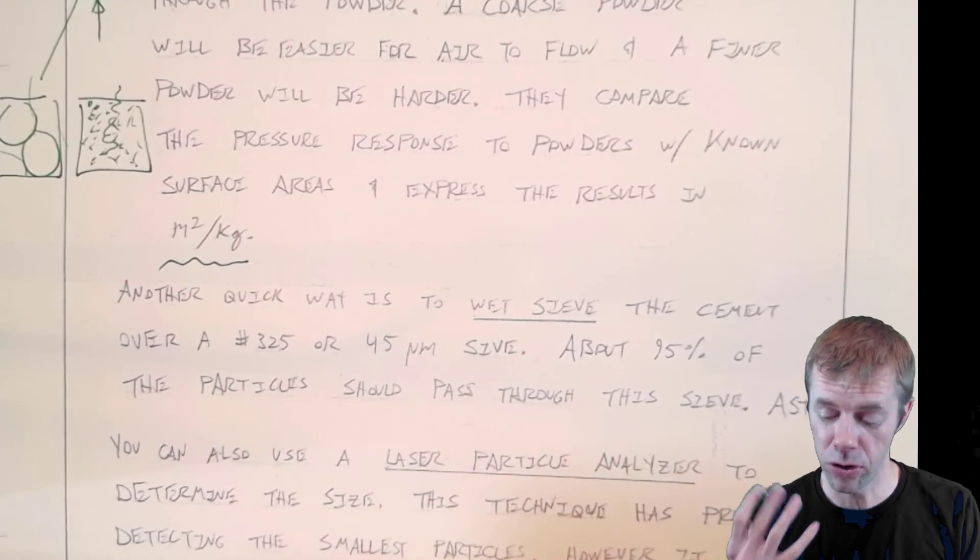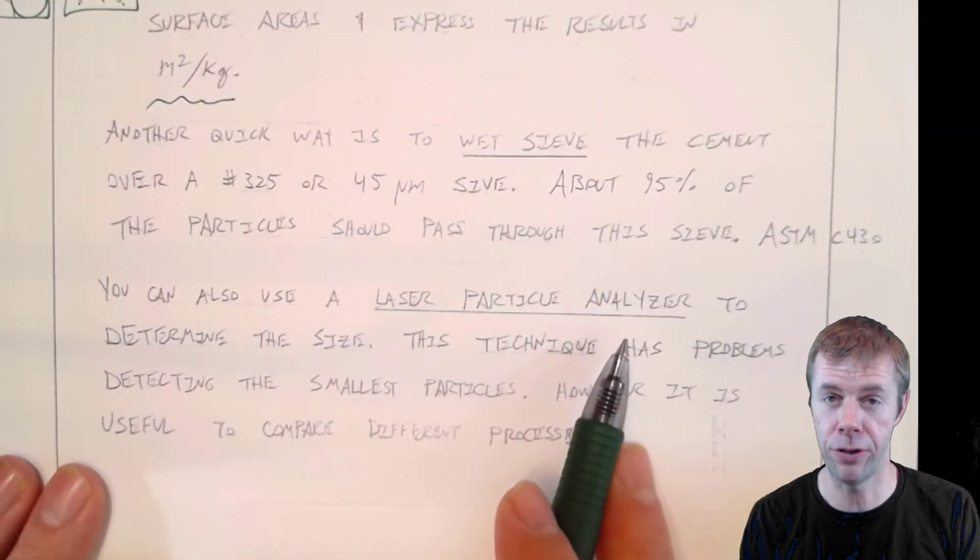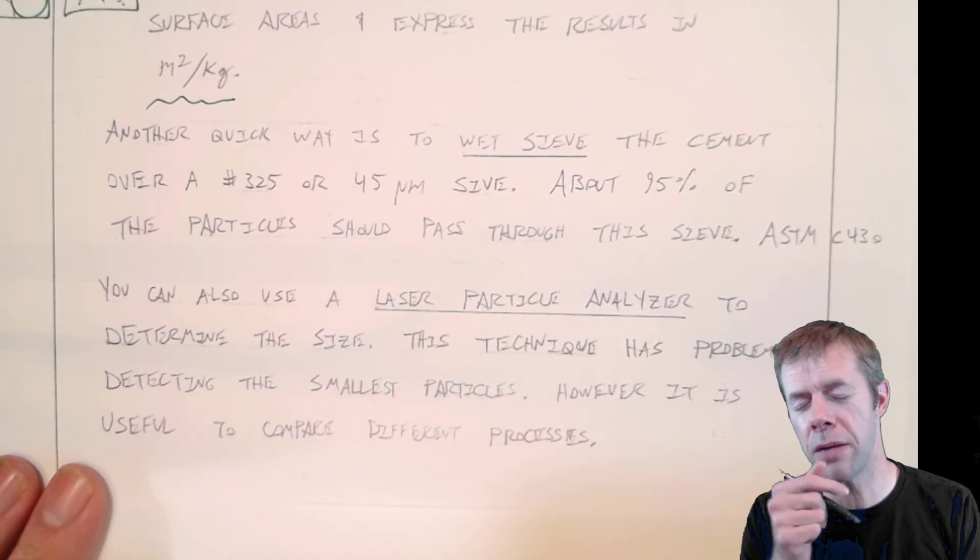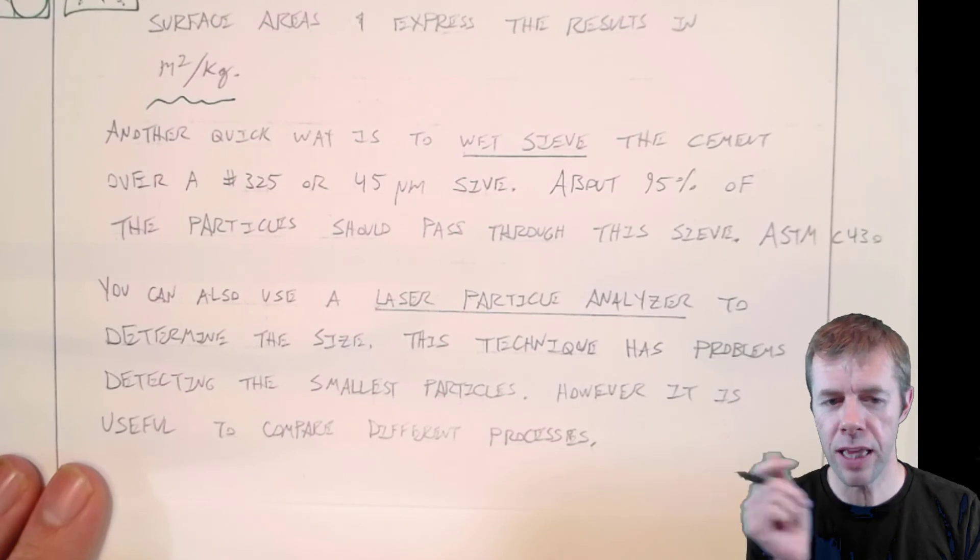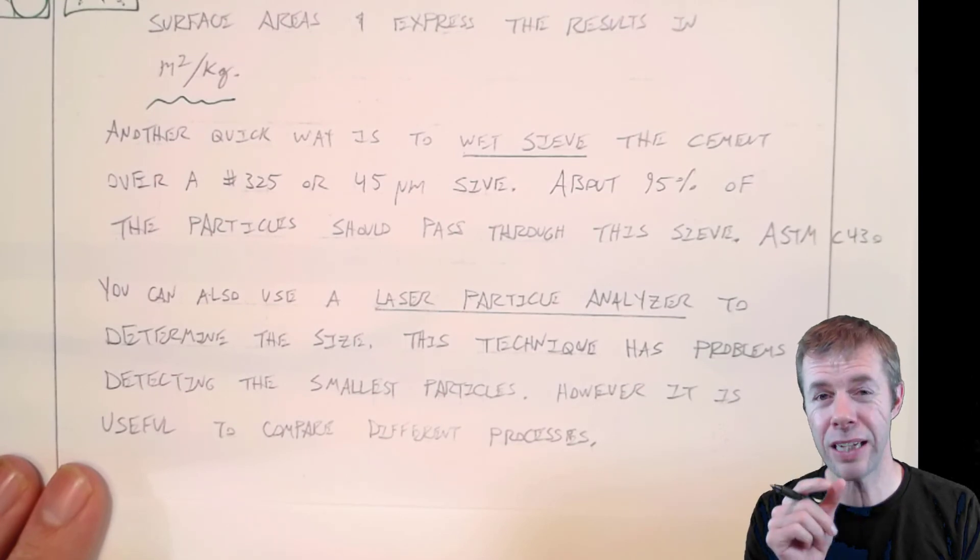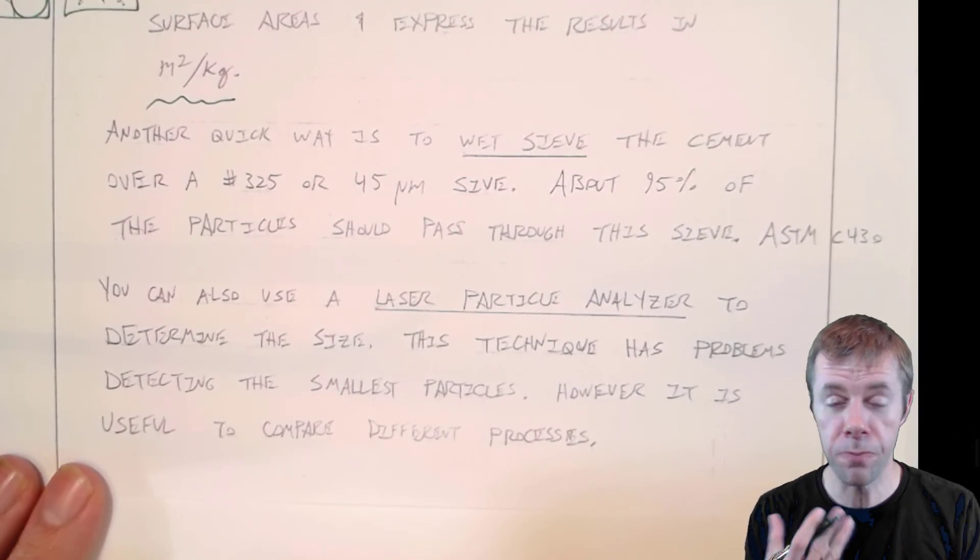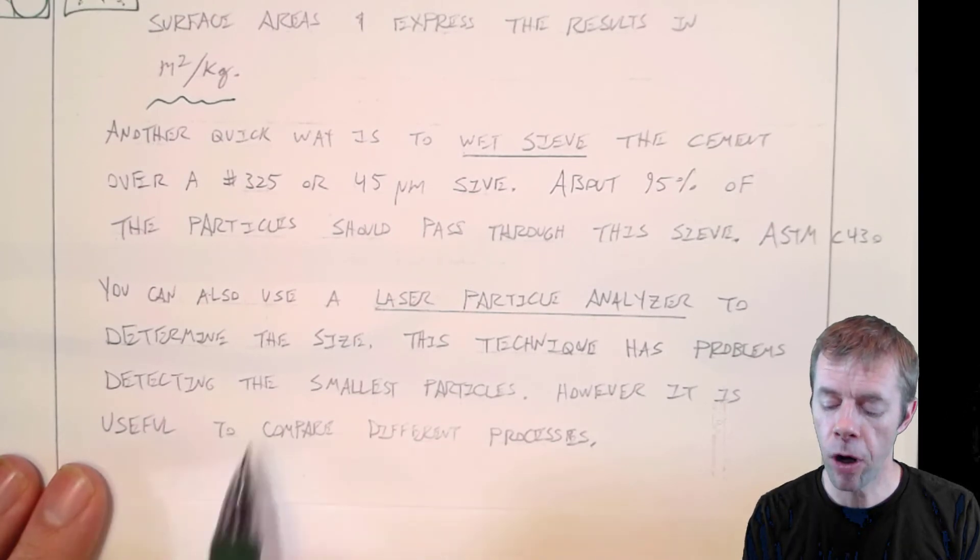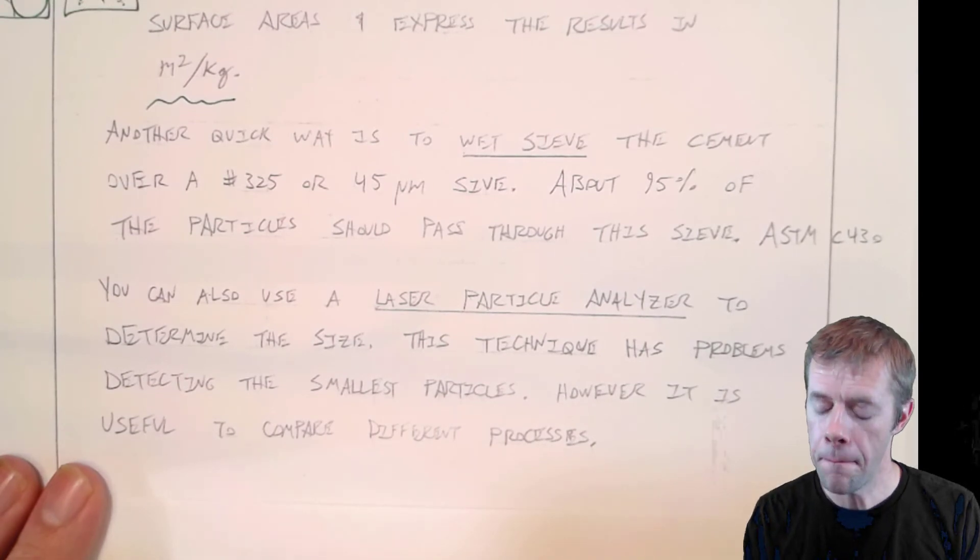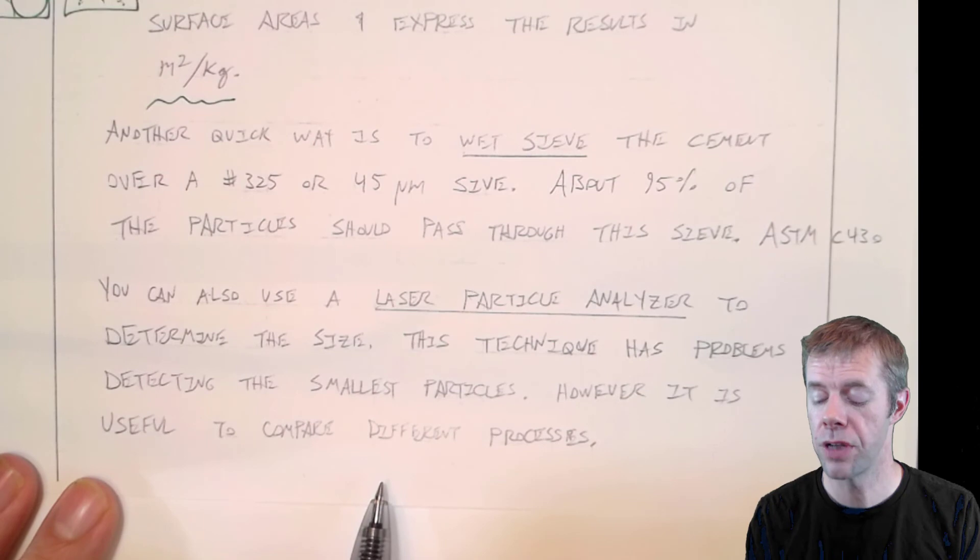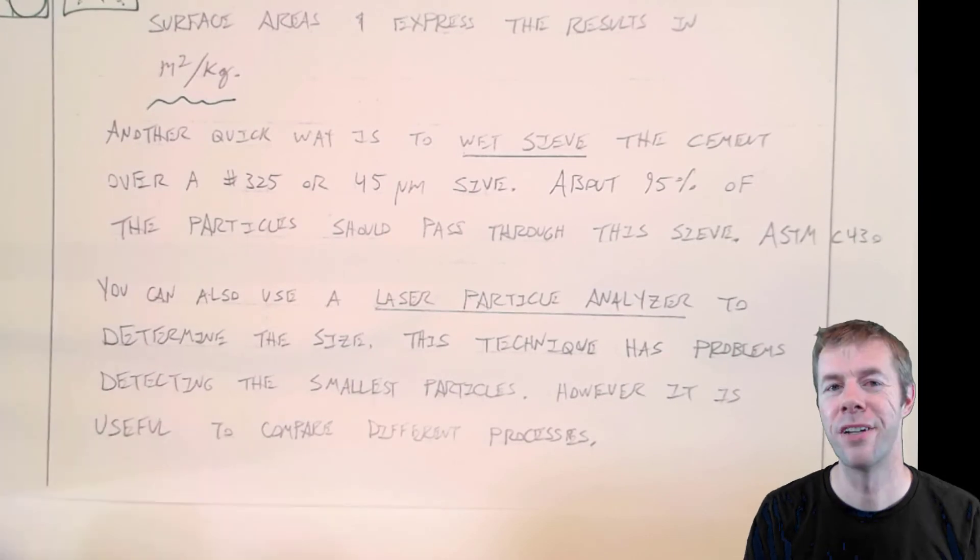You can also use something called a laser particle analyzer that will actually send particles through a tube. It suspends them in a fluid, sends them through a tube, and tries to use the laser to measure the size. There's some problems with it though. It's better than we've had before and definitely has problems detecting small particles or particles that clump together. But it is useful to compare different processes, and people are working to refine it every single day. Take care.